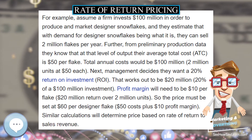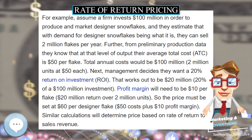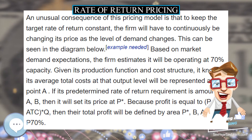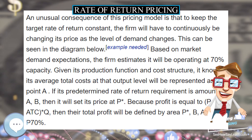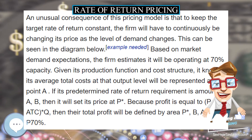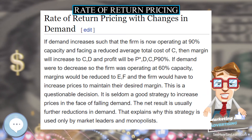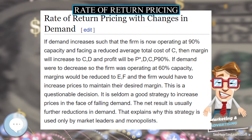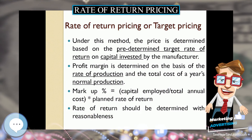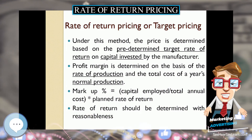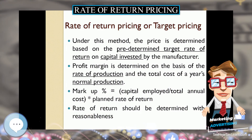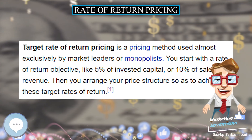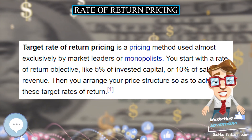If demand were to decrease so the firm was operating at 60 percent capacity, margins would be reduced to E-F and the firm would have to increase prices to maintain their desired margin. This is a questionable decision — it is seldom a good strategy to increase prices in the face of falling demand, as the net result is usually further reductions in demand. That explains why this strategy is used only by market leaders and monopolists.